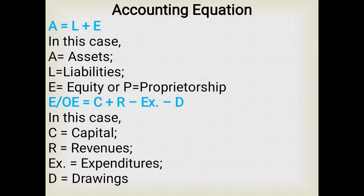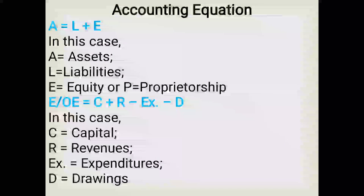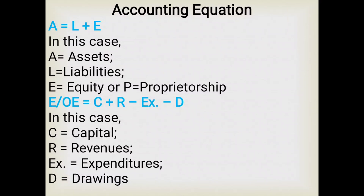Liability means the financial responsibility that has to be paid after a certain period of time — it is the claim of a third party over the total assets of the business. Equity is what remains after deducting third-party claims from total assets — it is the claim of the owner over the entire assets. Four elements affect equity: capital, revenue, drawings, and expenses. Capital means investment of the owner. The extended accounting equation is: A = L + C + R − E − D, where C is capital, R is revenues, E is expenditures, and D is drawings.